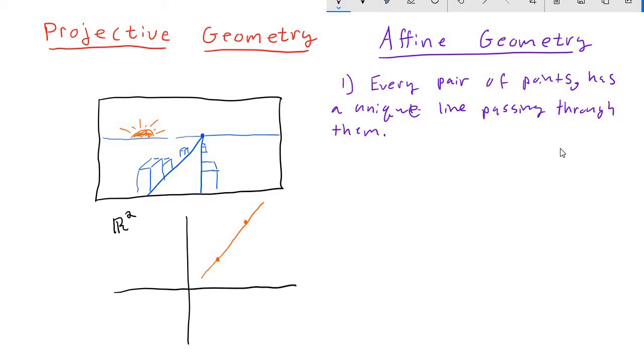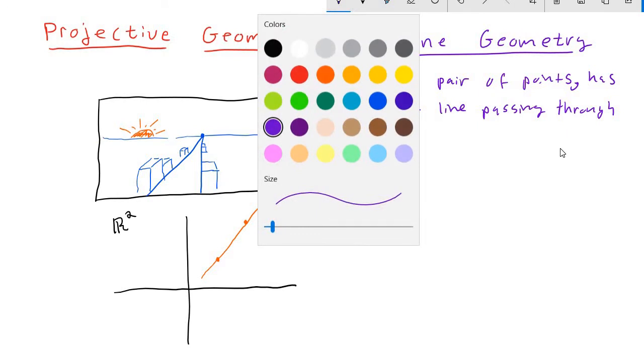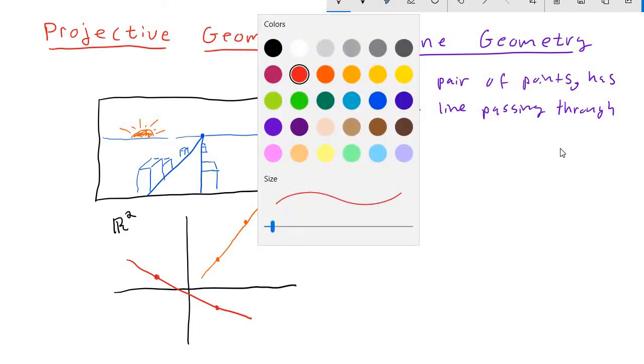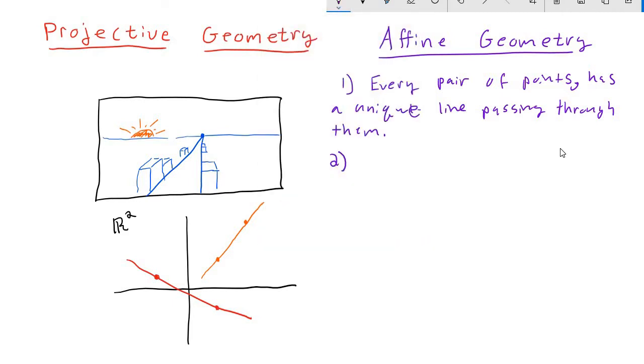Another thing to notice is that if I draw any line, there's always at least two points on this line. I can just pick anywhere here and here. Of course, there's infinitely many points, but there's always at least two. We'll see why this is important in a little bit. But every line has at least two points.